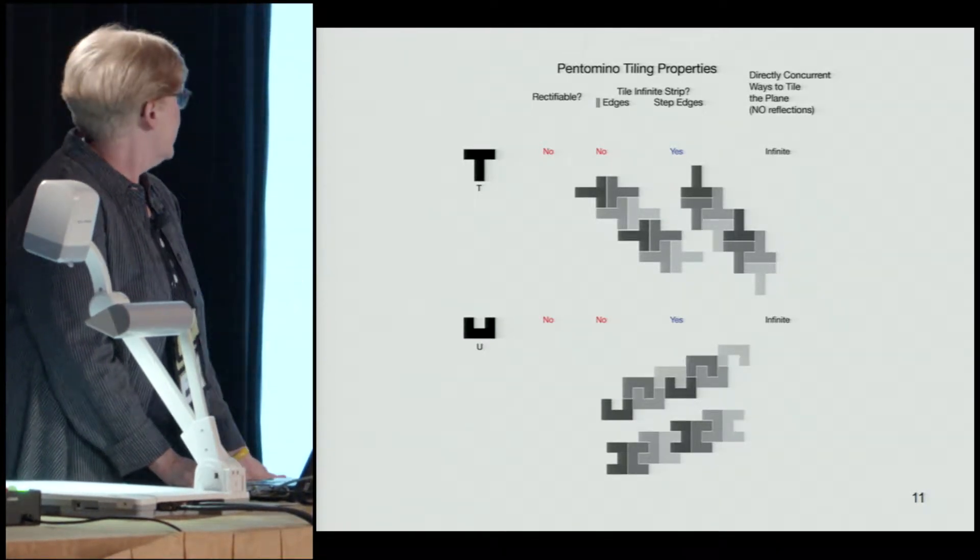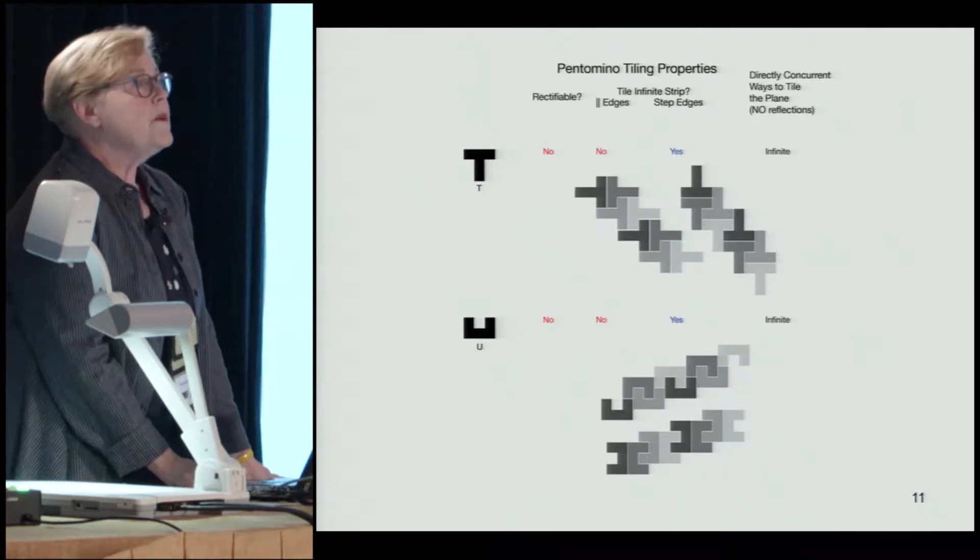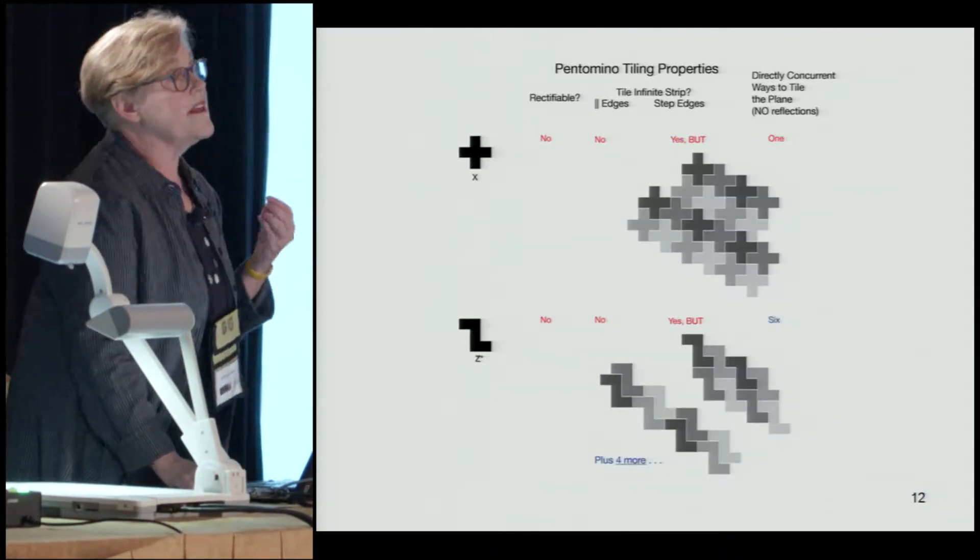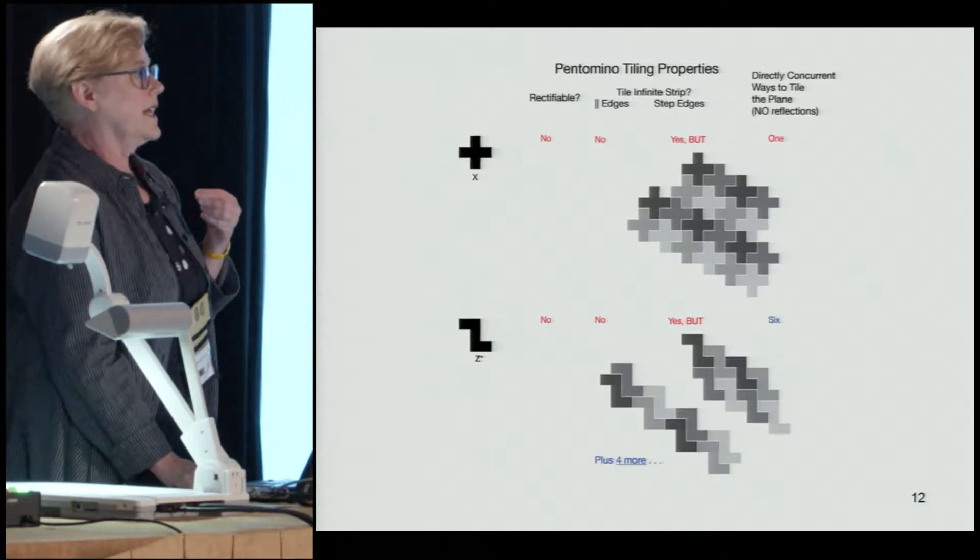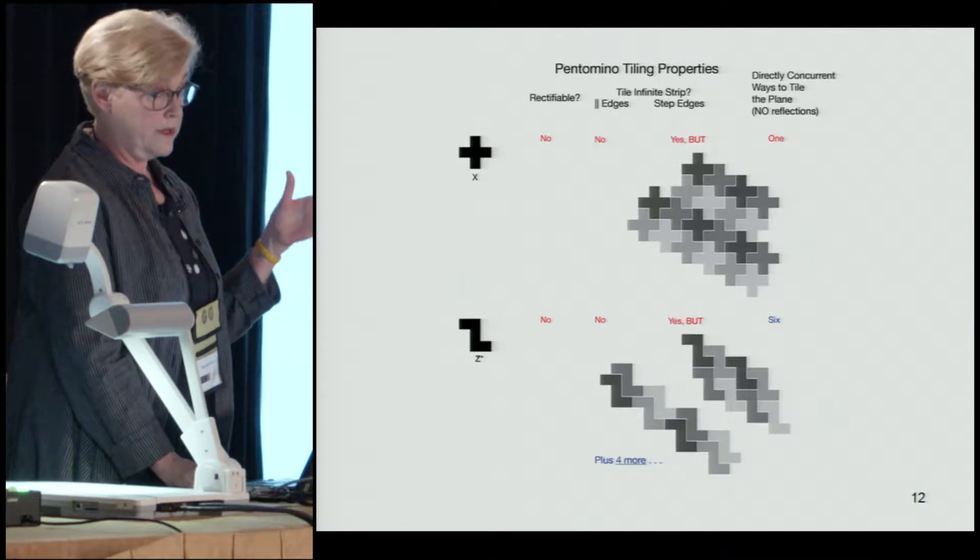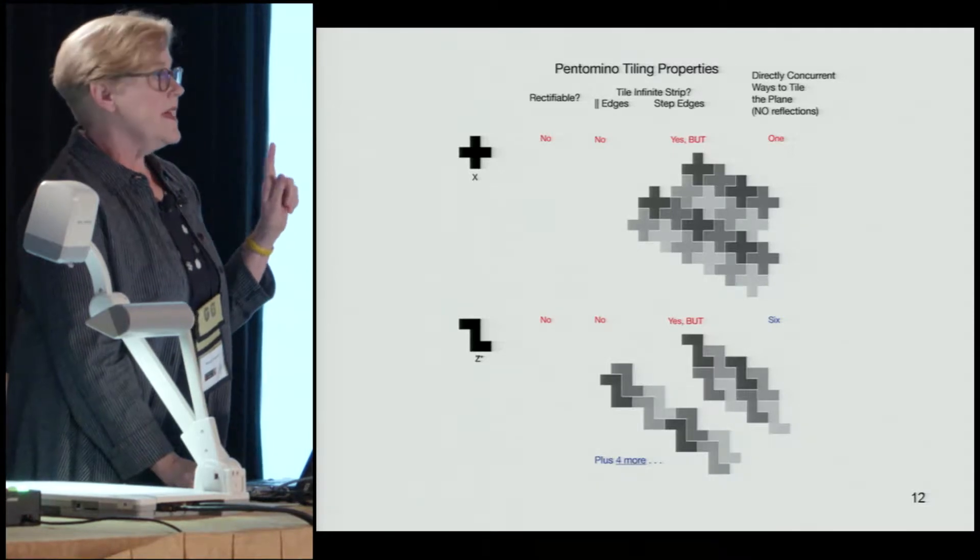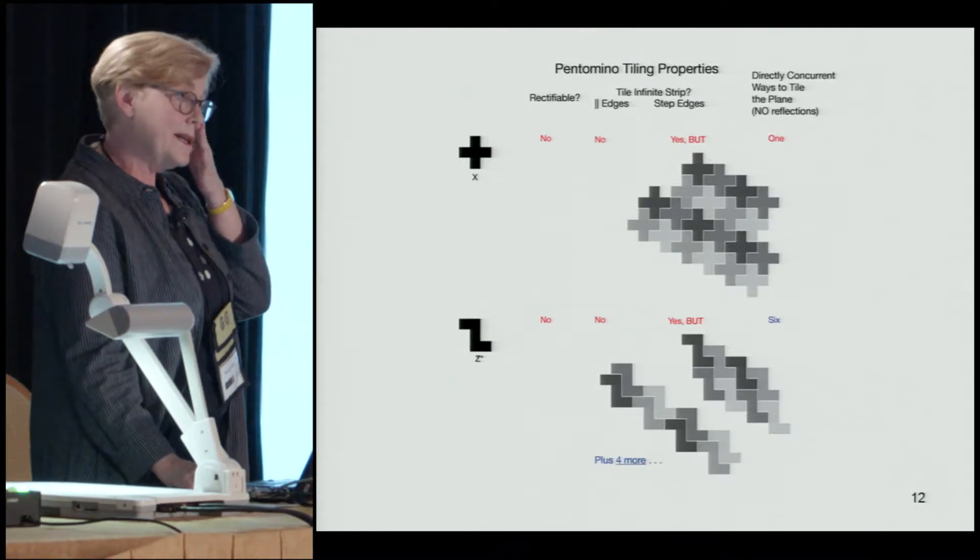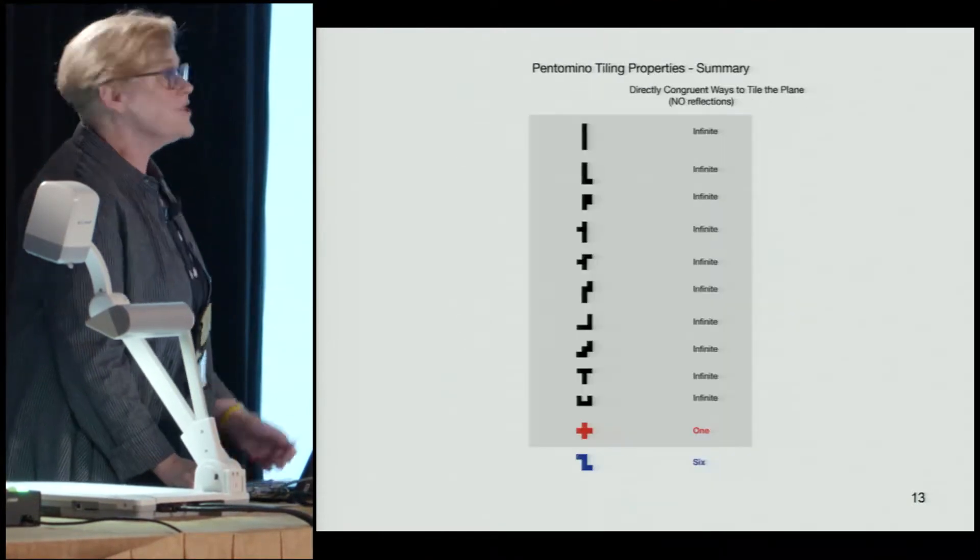That's pretty much true for the first 10 in this table. But now for something different: we find that with two of the pentominoes, there's a finite number of tilings. In this case I'm looking only at directly congruent tilings, no flipping over. The X can tile in just one way, and the interesting fact is the Z pentomino can tile in six different ways. That was kind of intriguing to me.